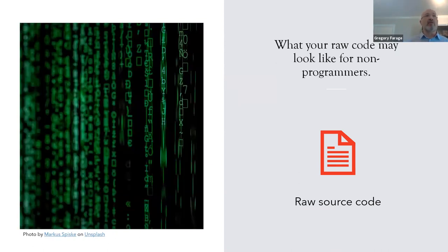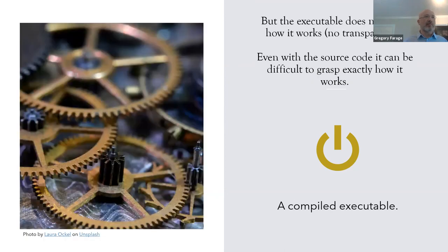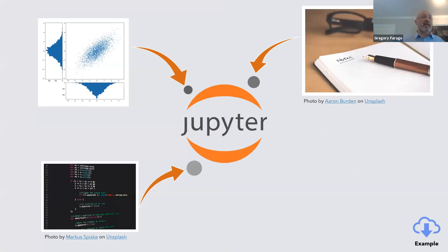If you share your code with a non-programmer, the code will look like something coming out of the Matrix. The alternative is to share a compiled executable - your collaborator just clicks it, runs it, and gets the output, which is great. But sharing the executable doesn't show how it works, giving a lack of transparency. That's where Jupyter comes in: Jupyter combines your code, your output, and all the notes you want to share with your audience or collaborators.